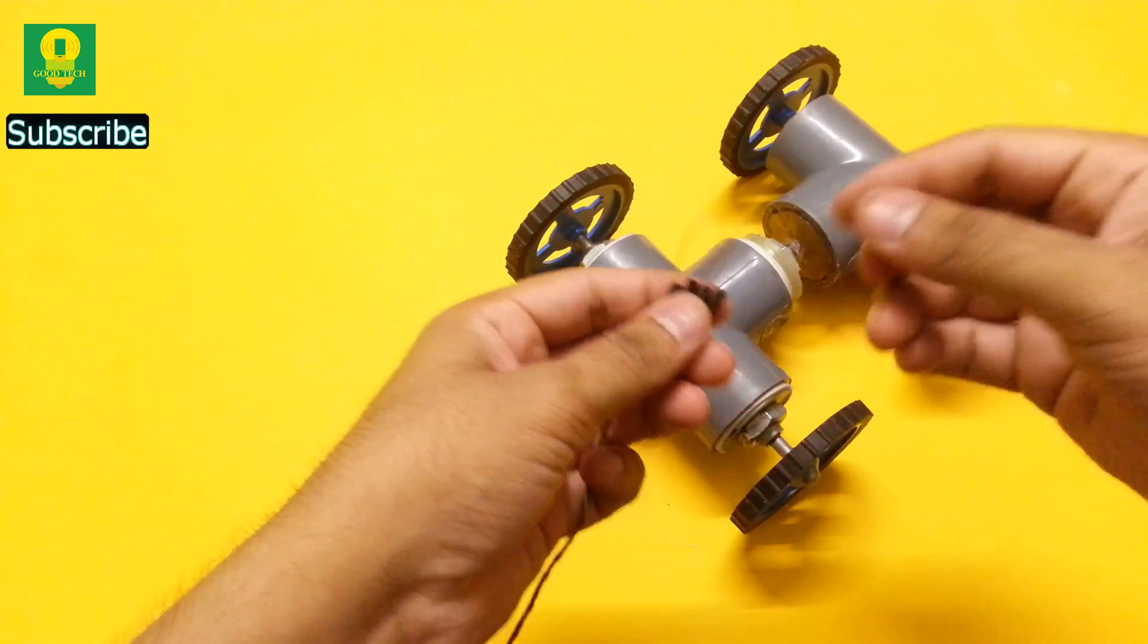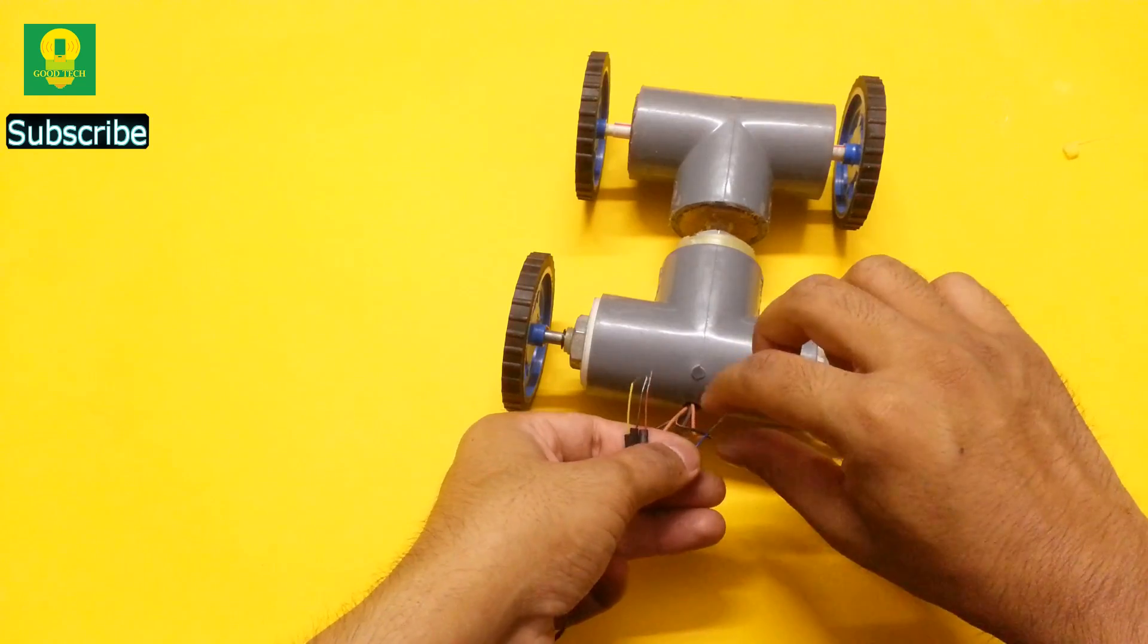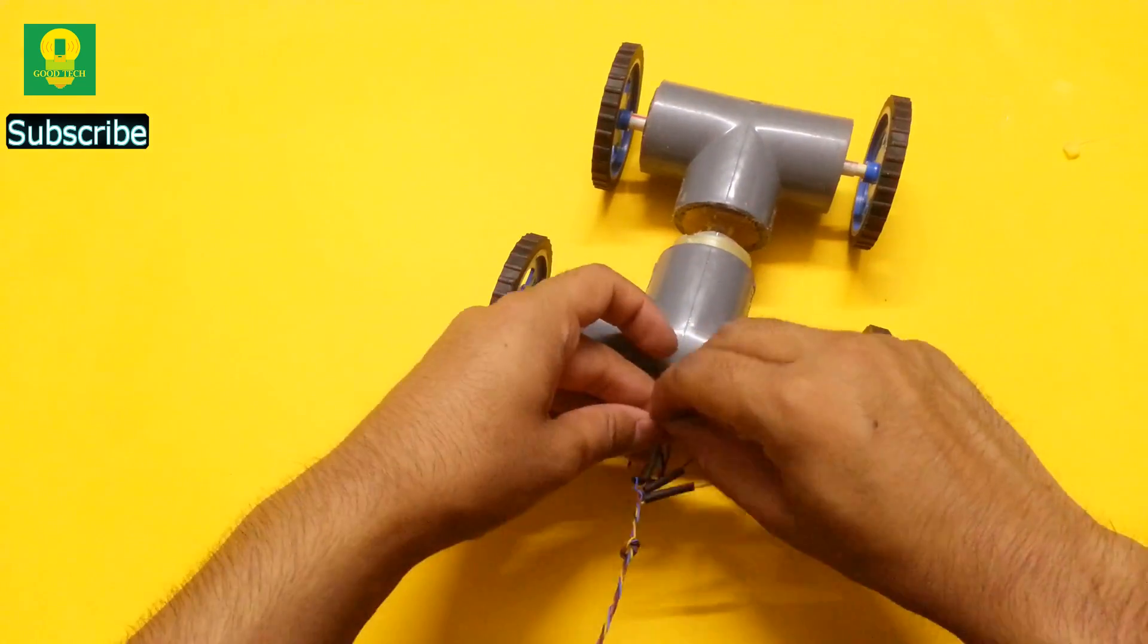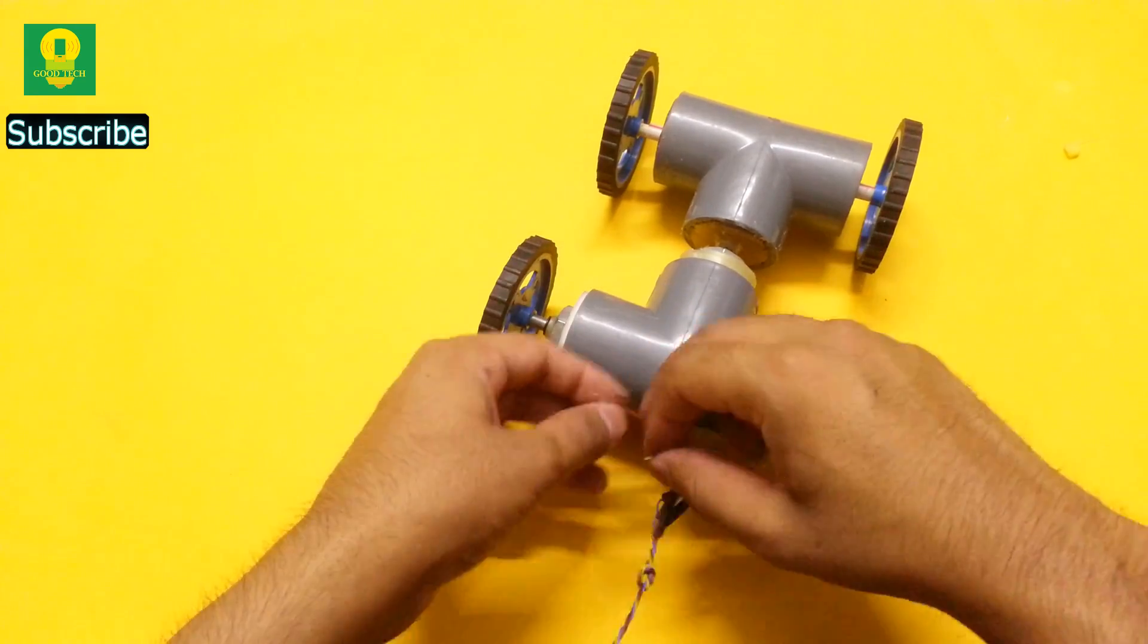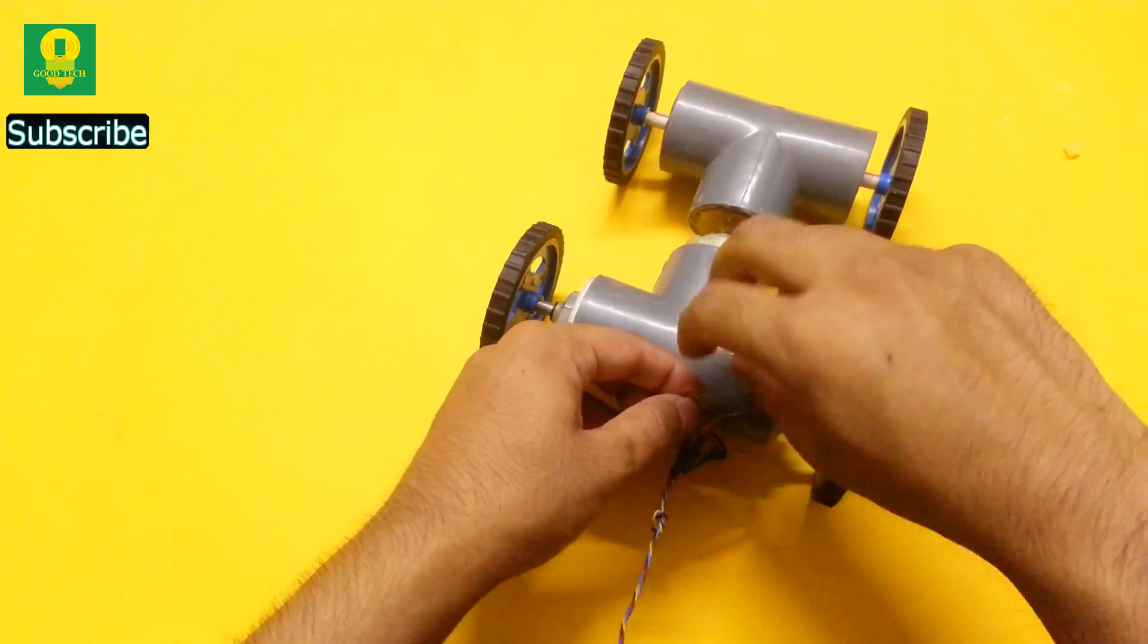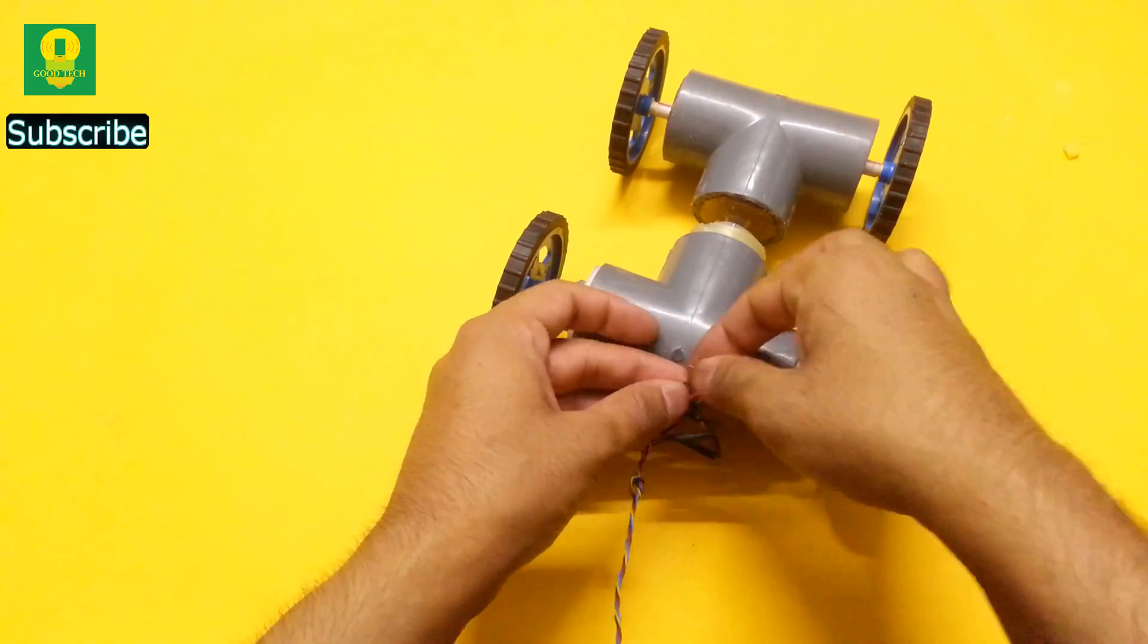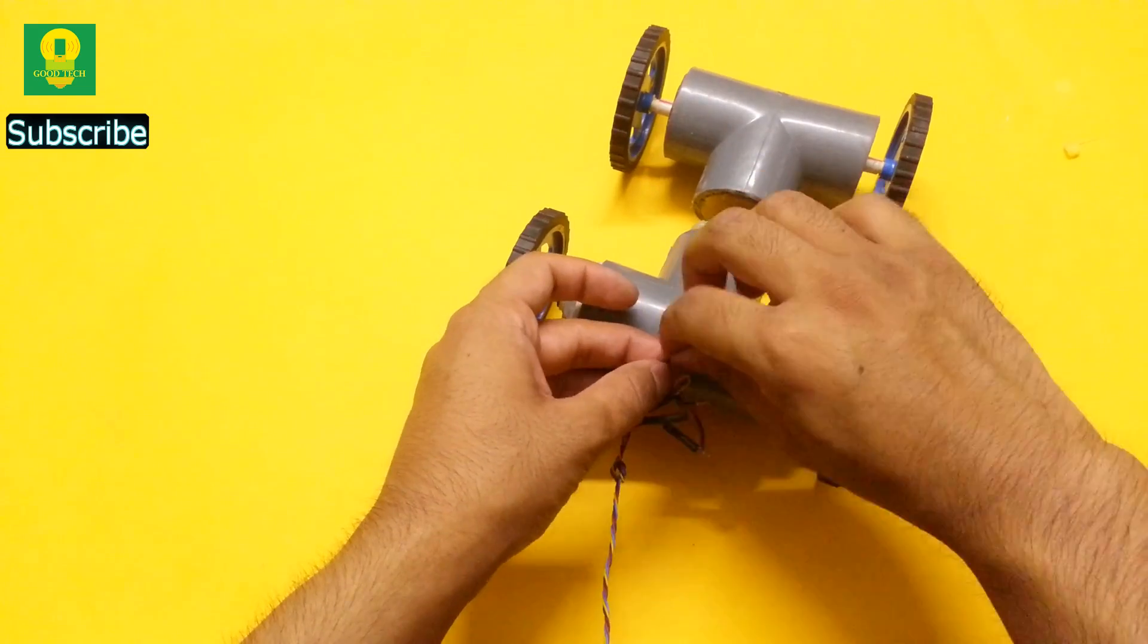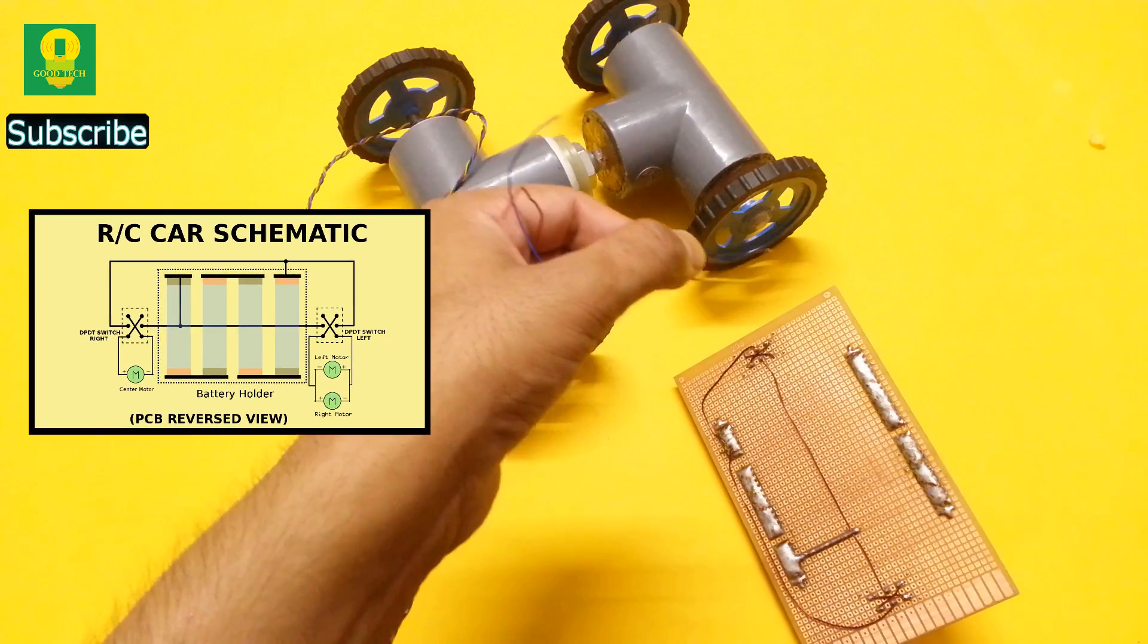Now take the car and four different color wires. Connect all the four wires to the motors. Refer to the schematic and connect the car to the remote control.